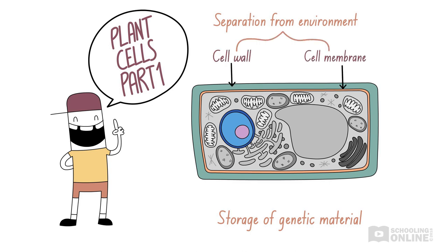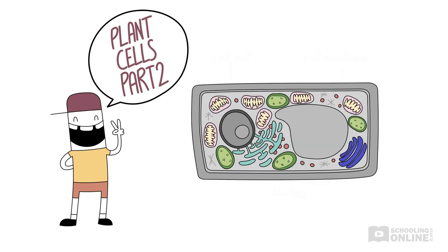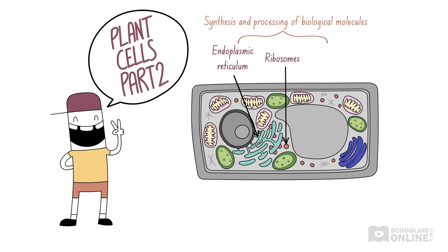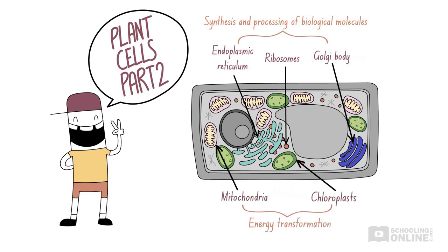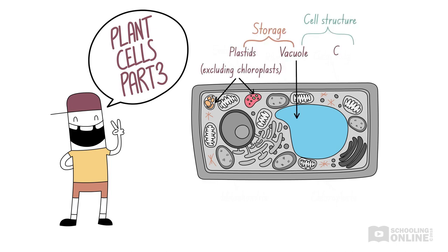We will also look at an organelle involved in the storage of genetic material — the nucleus. In the second lesson, we will focus on organelles responsible for the synthesis and processing of biological molecules, including the endoplasmic reticulum, ribosomes, and Golgi body, as well as organelles involved in energy transformation: the mitochondria and chloroplasts. In the third lesson, we'll cover organelles responsible for storage and cell structure — the vacuole, plastids, and cytoskeleton.